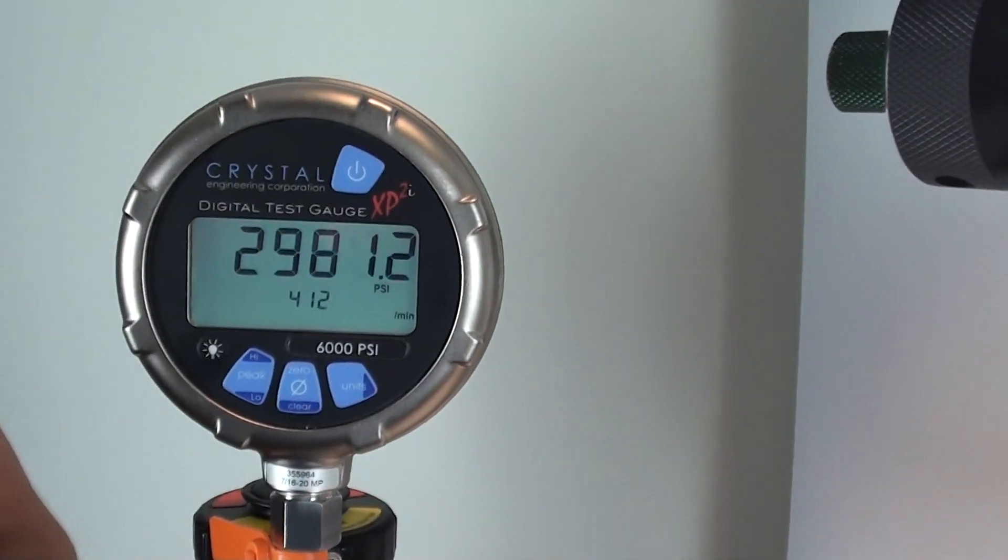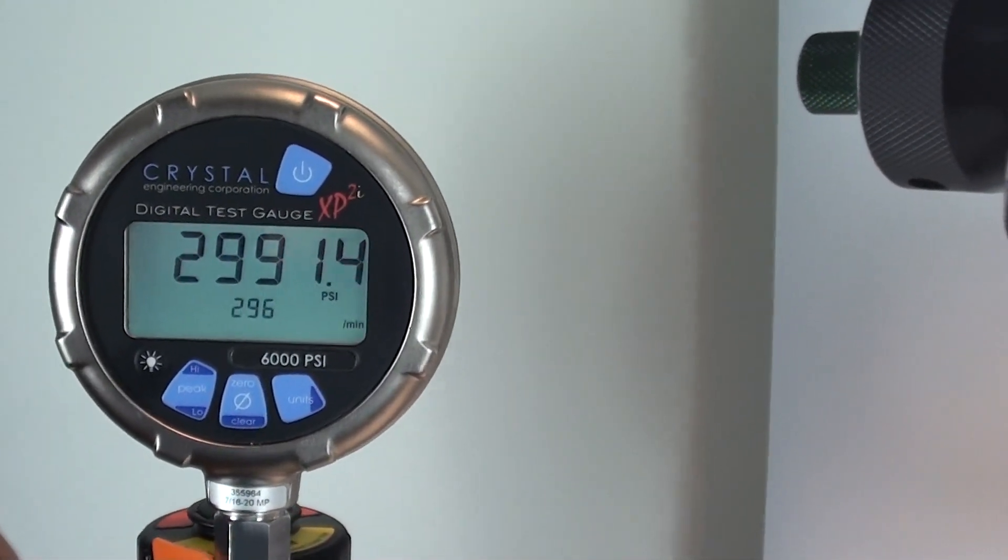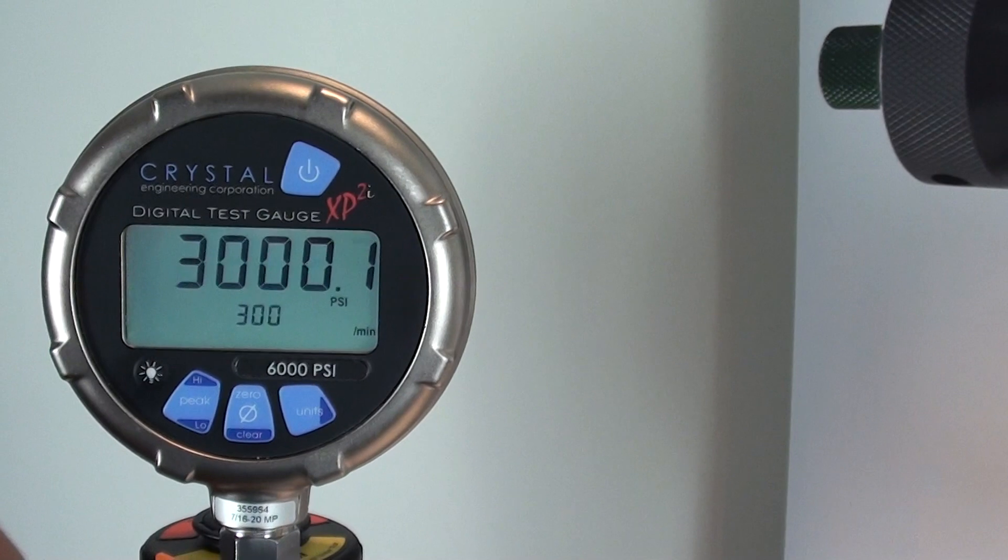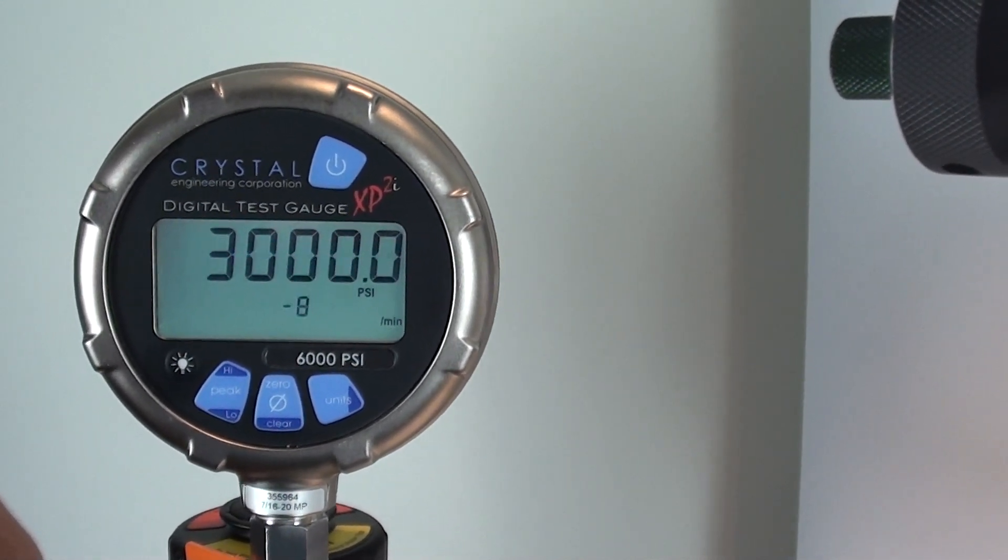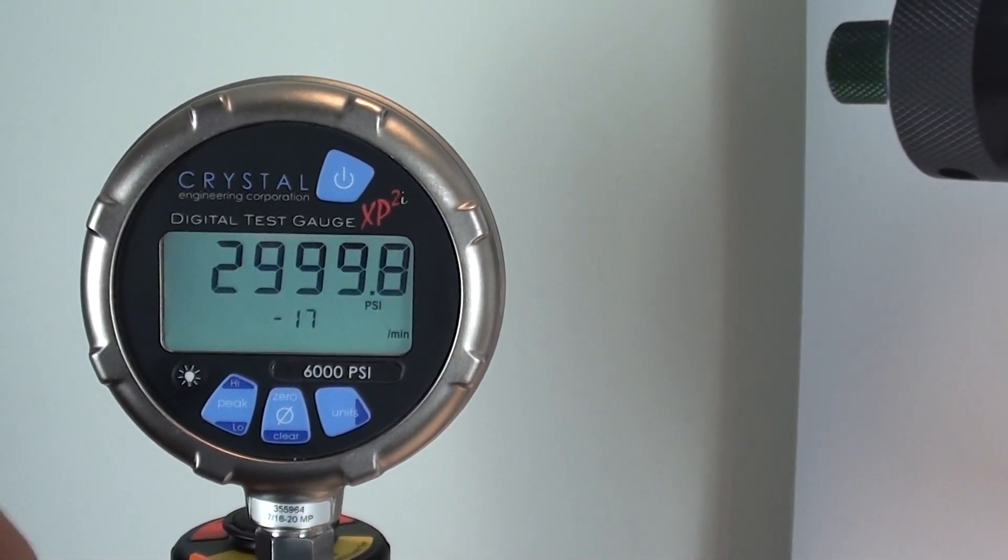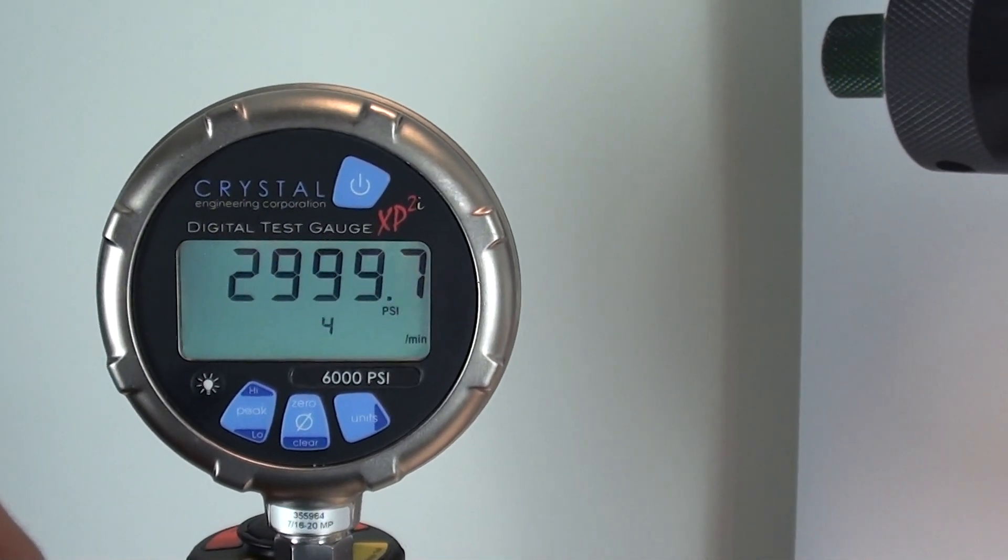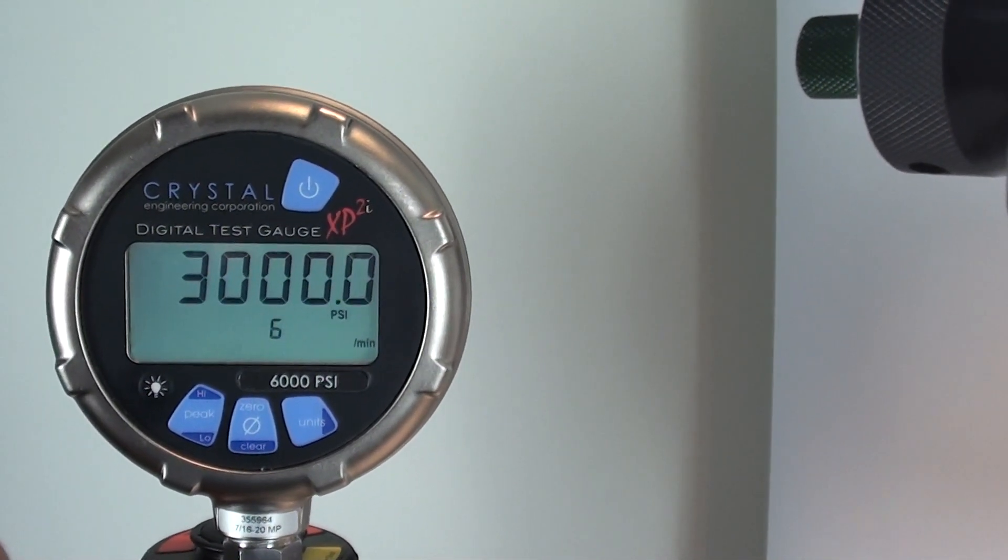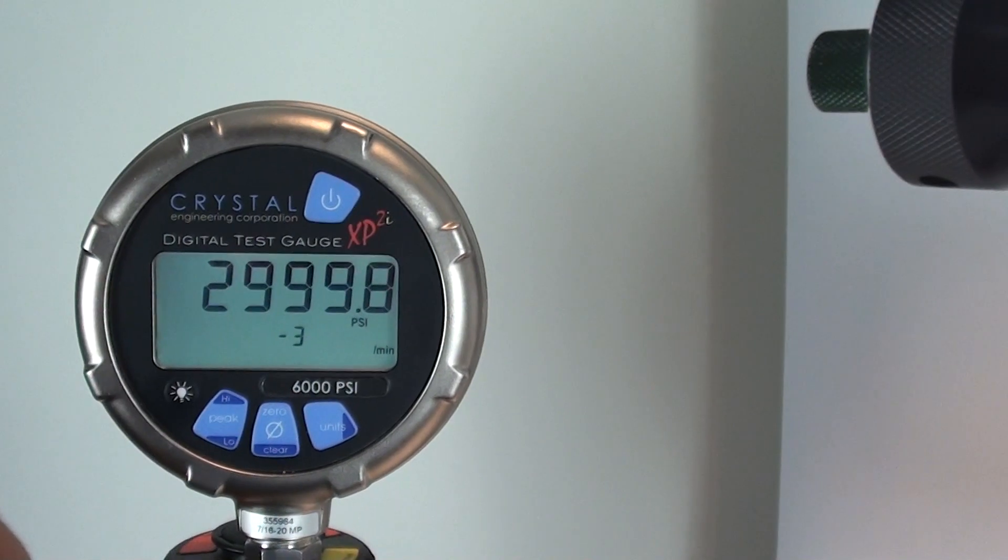Using this fine adjustment, we're able to adjust very, very accurately up to about 3000 psi. Or I should say, exactly 3000 psi. And there you go, 3000 psi using a hand pump.